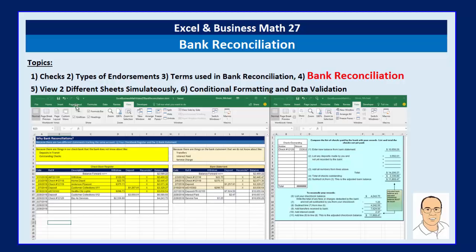We'll also get to see two cool Excel tricks. We'll see how to view two different sheets simultaneously — a sheet with our checkbook register and bank statement, and on a completely different sheet, our bank reconciliation form. At the end of the video, I'll show you a cool trick for conditional formatting and data validation that will allow you to simply type an X, meaning we reconcile this item, and the whole row will turn yellow.